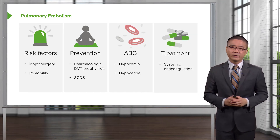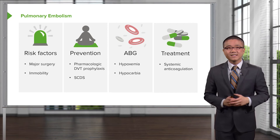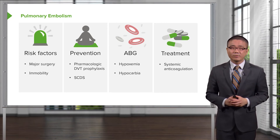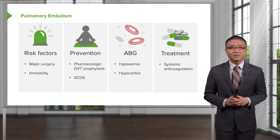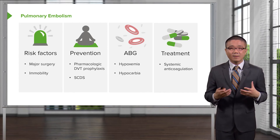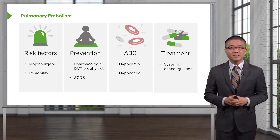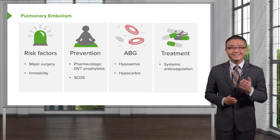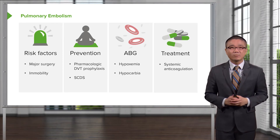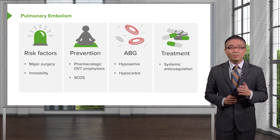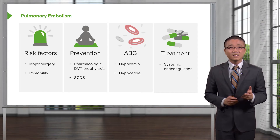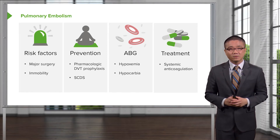How do we treat pulmonary embolism? Unfortunately, a lot of it is up to your own body to break down the clot. The same clot process that allows us to stop bleeding in the post-operative period also has a mechanism by which clots are broken down in an organized fashion. We give systemic anticoagulation for two reasons: number one, to decrease the propagation of further clot both in the legs and in the lungs; and number two, to decrease the inflammatory response.